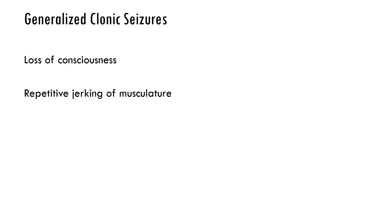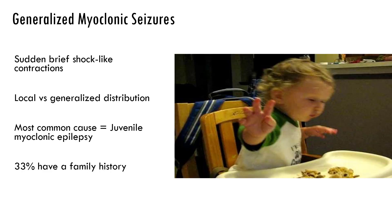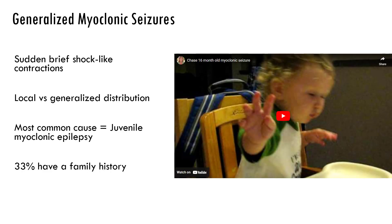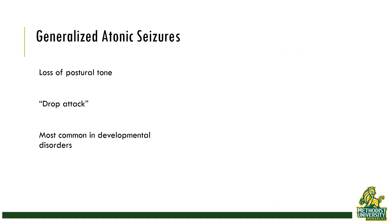There are also generalized clonic seizures with loss of consciousness and jerking of the musculature but without the initial tonic contraction. These folks fall forwards instead of backwards sometimes, but they can have drop attacks. This is a video of a child having generalized myoclonic seizures — shock-like generalized contractions that can be local or generalized.